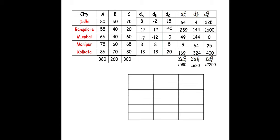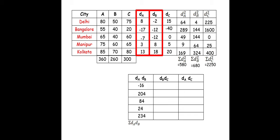Next we make three more columns: dA·dB, dB·dC, and dA·dC. For dA·dB: 8×(−2) = −16, (−17)×(−12) = 204, (−7)×(−12) = 84, 3×8 = 24, 13×18 = 234. Summation of dA·dB = 530.